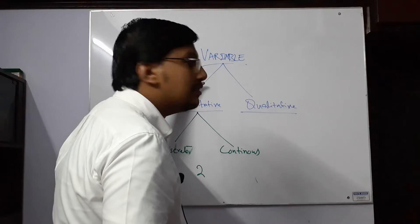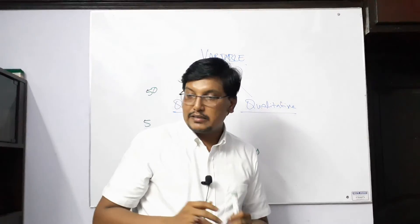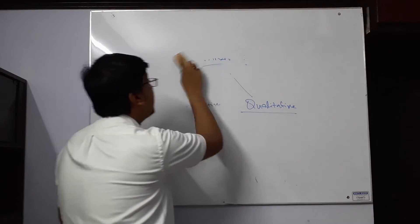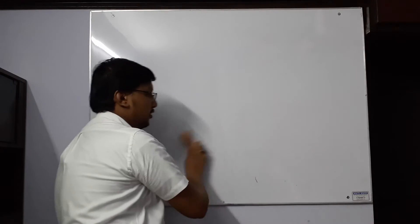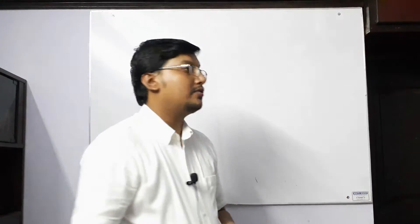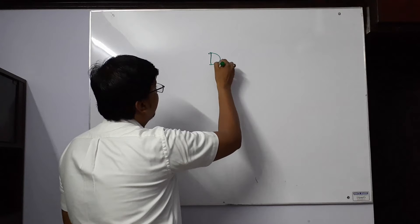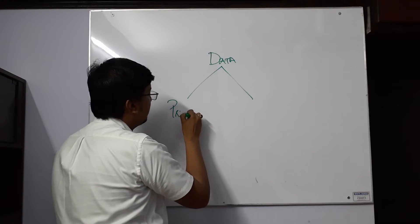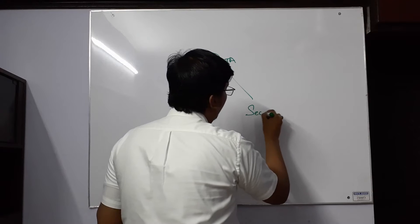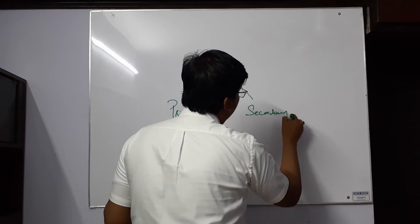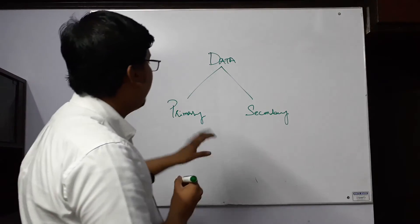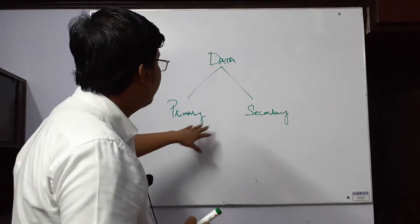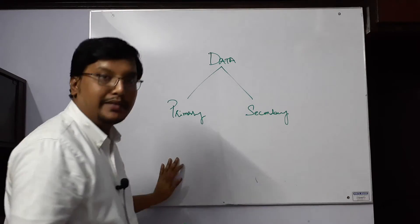Now, after knowing variables, there is a different topic that comes to us. We have got data, and data has two types: primary data and secondary data. This belongs to the collection of data — what type of data collection is it? We decide whether the data is from primary or secondary sources.